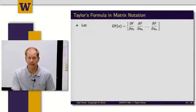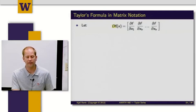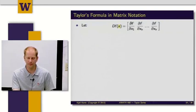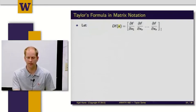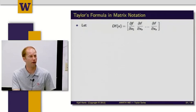So let's let D of f of x — the gradient of my function f — be a function I can evaluate at a point x, defined to be the first partial derivative, the second partial derivative, and so on, arranged in a row vector. So for a scalar-valued function of n variables, the gradient is a row vector with n elements.